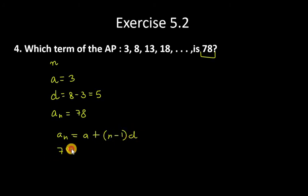aₙ is 78, a is 3, n is unknown, d is 5. So 78 = 3 + (n-1)×5.